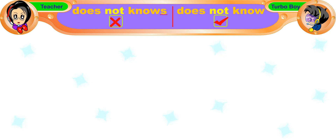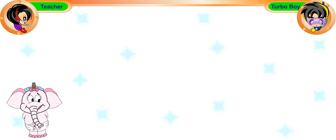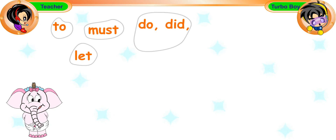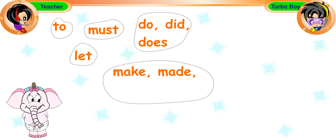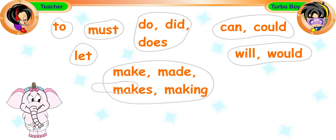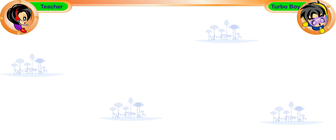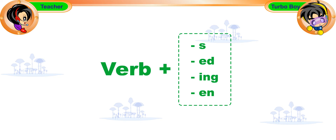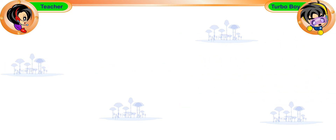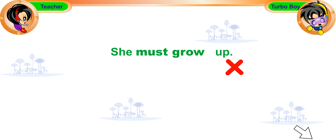Now, Turbo Boy, do you understand today's lesson? Yes. First, we learned about 18 words that are used with root words, and they are: to, let, must, do, did, does, make, made, makes, making, and modals such as can, could, will, would, shall, should, may, and might. These 18 words are powerful and they always look for the first verb behind them and cut away word parts such as 's,' 'ed,' 'ing,' and 'en.' For example, to say or write 'she must grows up' is incorrect. 'Must' is one of the 18 words, so the letter 's' from 'grows' is removed and the root word 'grow' remains after 'must.'